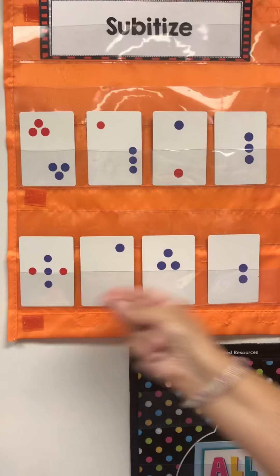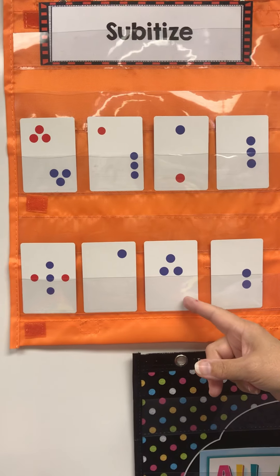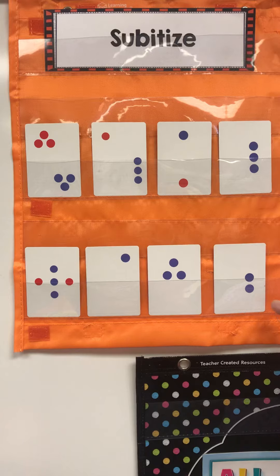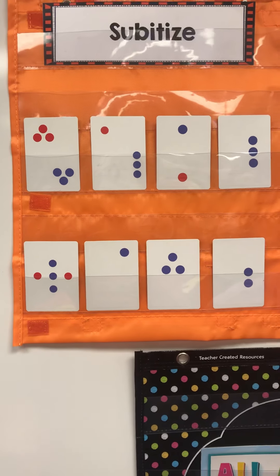That one's really hard. One. Can you subitize this one? Three. How about this one? Two. Good job.